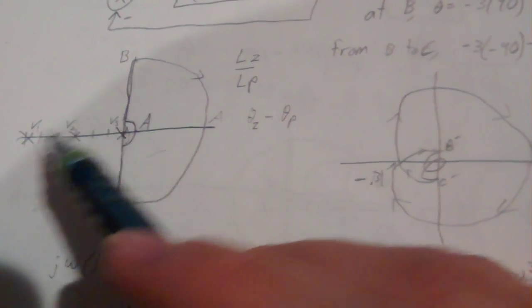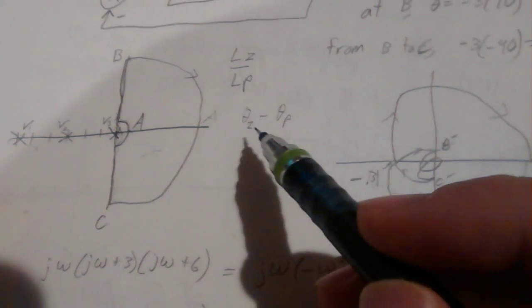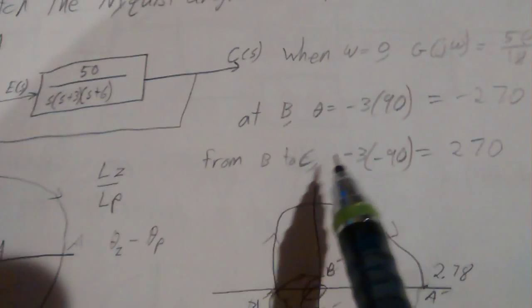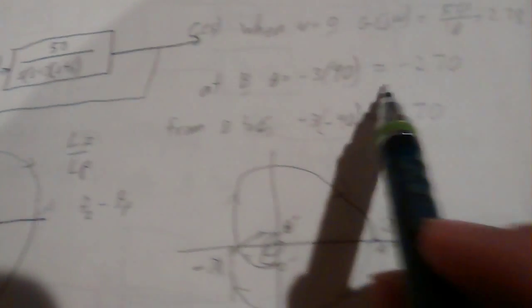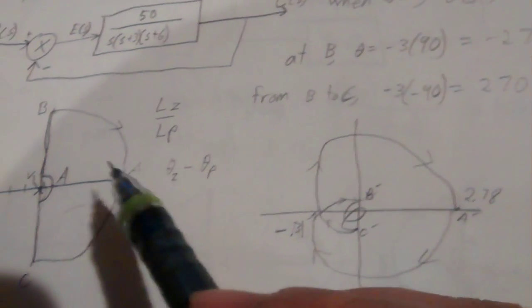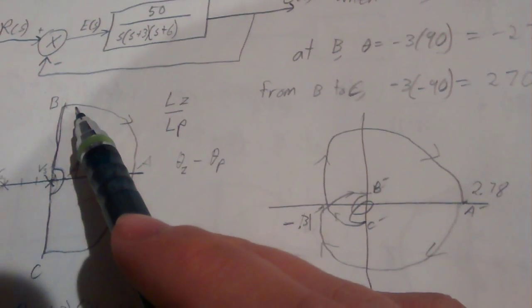At B, all three angles are 90 degrees, so we have negative 3 times 90 equals negative 270. So it's going to move 270 degrees going from point A to point B.